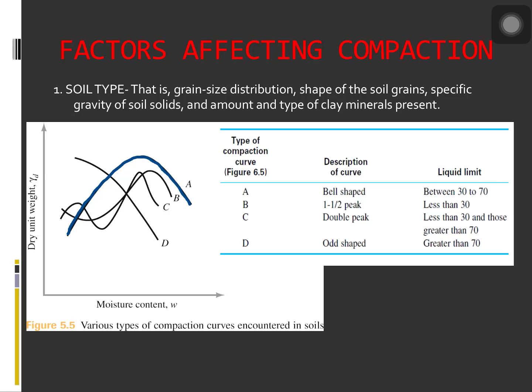Type A compaction curves are the ones that have a single peak. This type of curve is generally found in soils that have a liquid limit between 30 to 70. Curve type B is a one and one half peak curve, and curve type C is a double peak curve. Compaction curves of types B and C can be found in soils that have a liquid limit less than about 30.